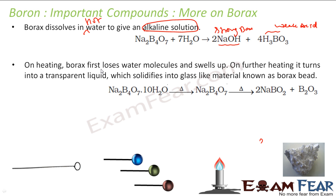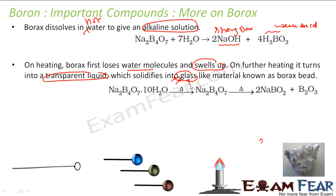On heating, borax first loses water molecules and then swells up. On further heating, it turns into a transparent liquid. When this liquid solidifies with some other metals, it gives a color to the glass — it comes into a glass shape actually. When you heat this glass with some metals, it gives different colors.